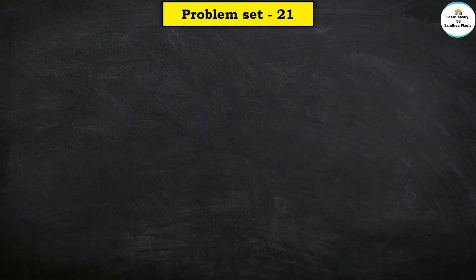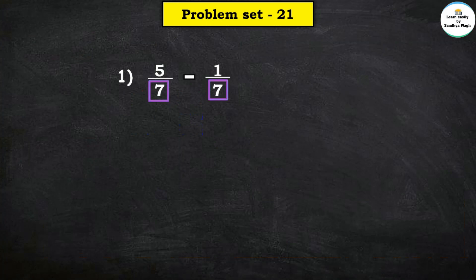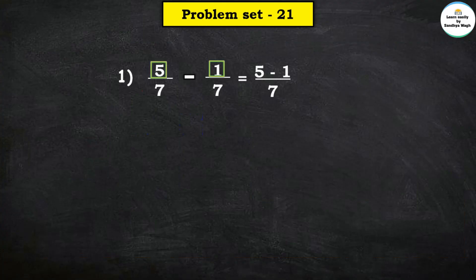Now let us solve Problem Set 21. Question 1, number 1: 5 upon 7 minus 1 upon 7. Here the common denominator is 7, so let us write 7 in the denominator's place and subtract the numerators. So 5 minus 1 is equal to 4, and the denominator is 7. The answer is 4 upon 7.